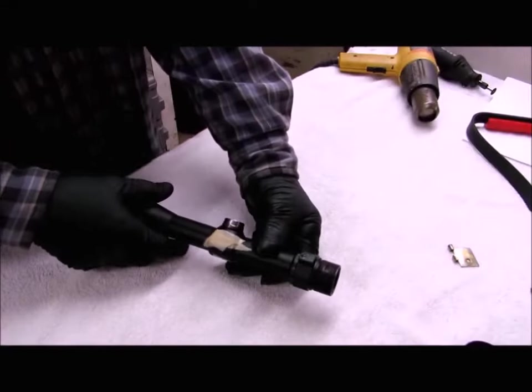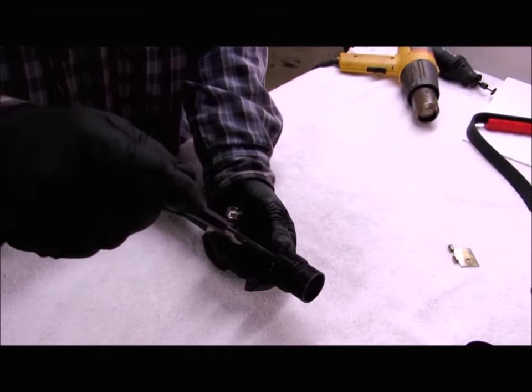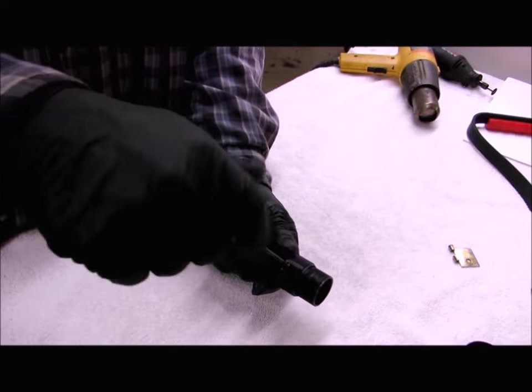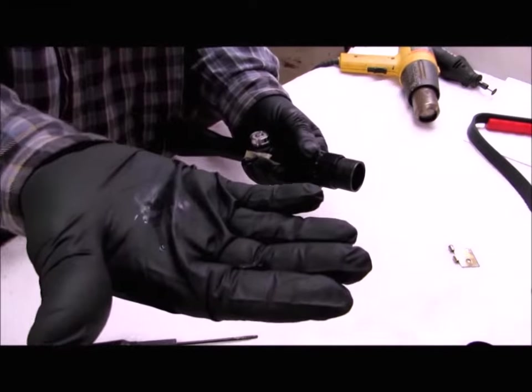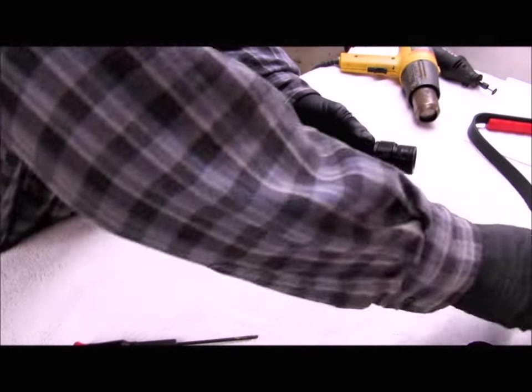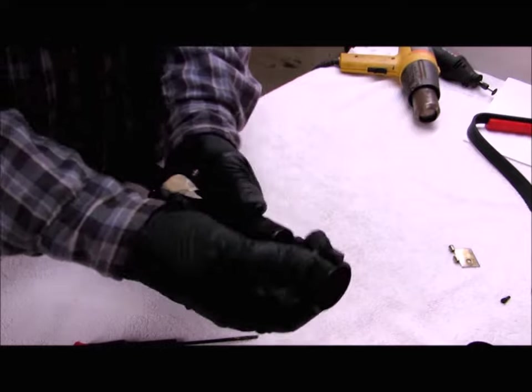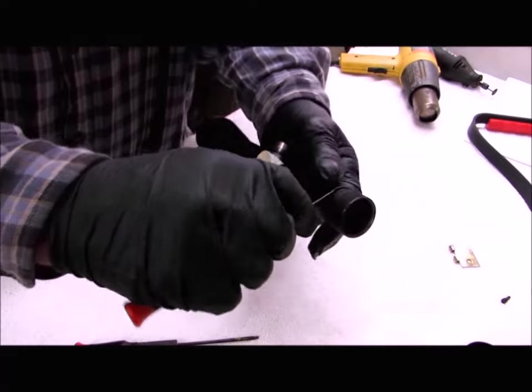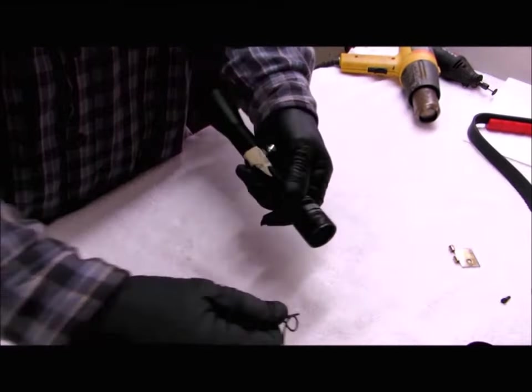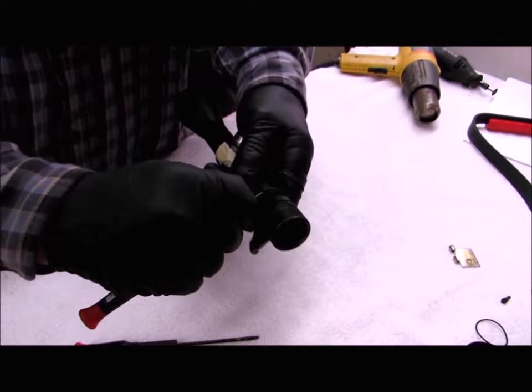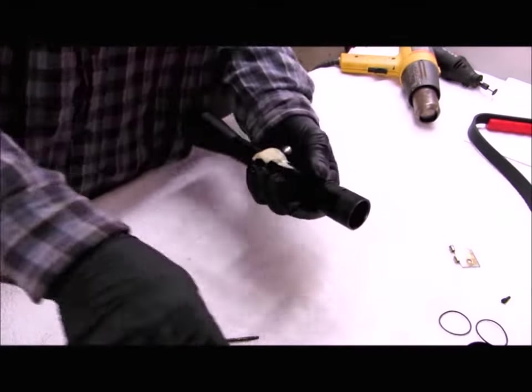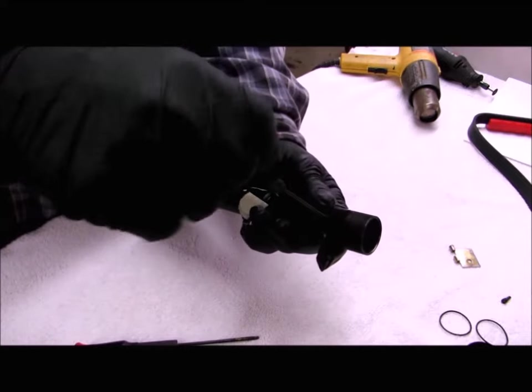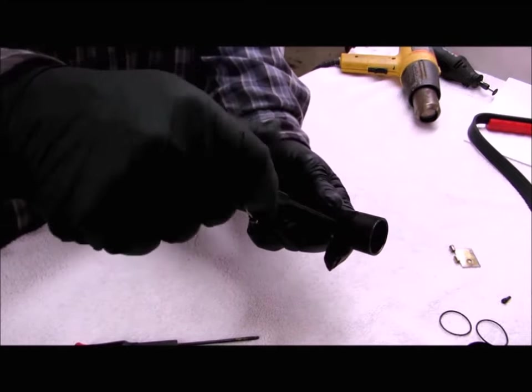Now I'll remove the erector. In order to do that, I have to remove the magnification ring. This one's held on by a screw. The ring just pushes off to the rear. There are two O-rings that act as seals for the scope tube. Remove those. This scope has a screw in the side that positions the erector in the scope tube.